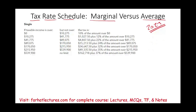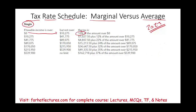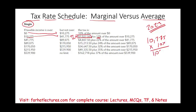Let's first read the table, then work a quick example. For the purpose of this illustration, we are using a single taxpayer. If the taxable income is from zero up to $10,275, you pay 10% on any amount above zero up to that amount. So if you make $9,000, you pay 10%, and your tax would be $900. Once your taxable income exceeds $10,275 up to $41,775, you pay $1,027.50 plus 12% of the amount above $10,275.